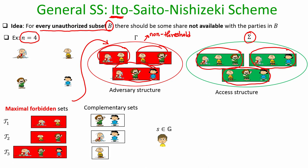To share secret S, the dealer checks how many potential unauthorized subsets are in the adversary structure. In this case there are three, so the dealer computes 3 random shares that sum to S: pick S1 and S2 randomly, and set S3 = S − S1 − S2. If there were more sets in the adversary structure, the dealer would need correspondingly more pieces.